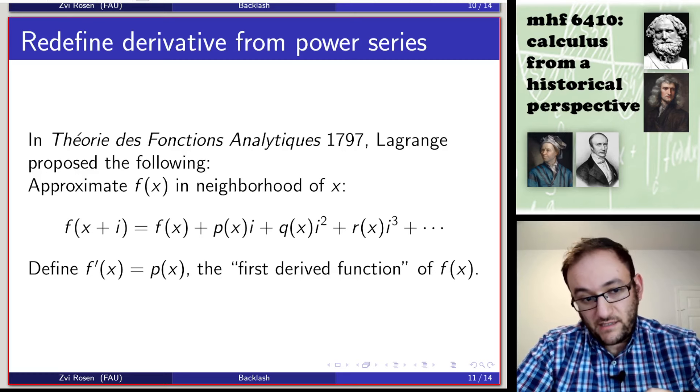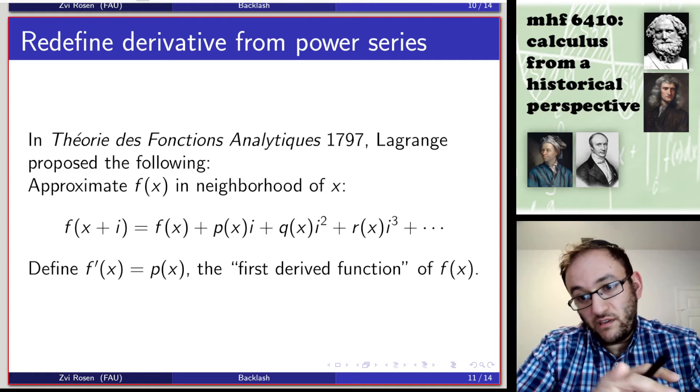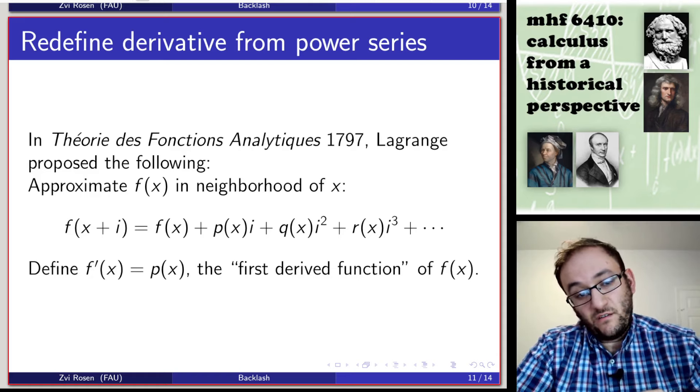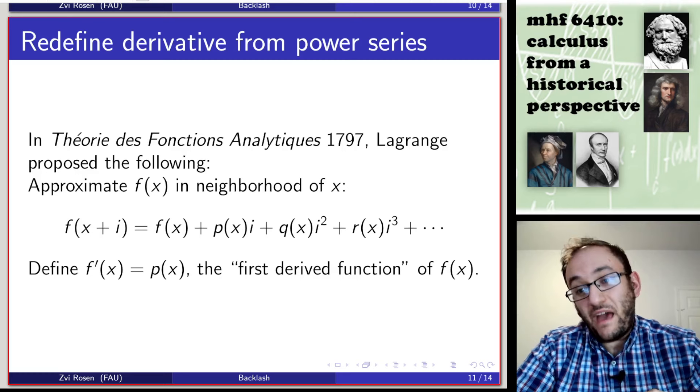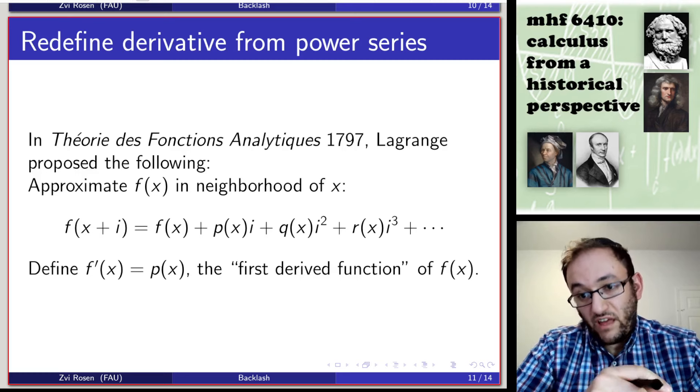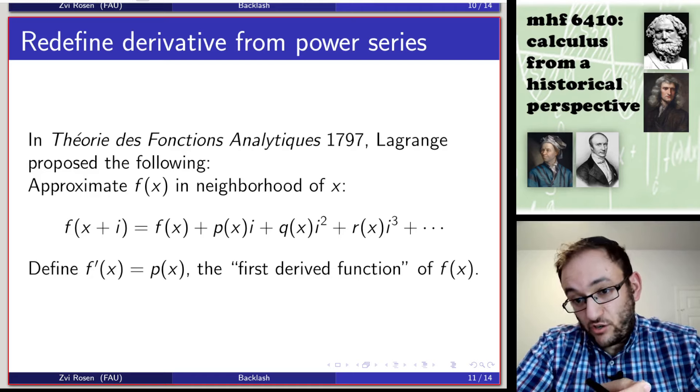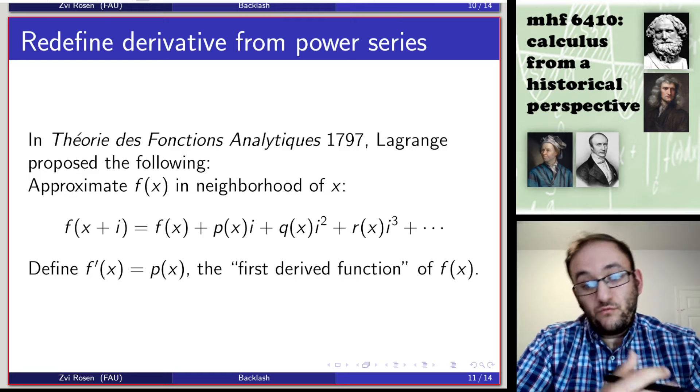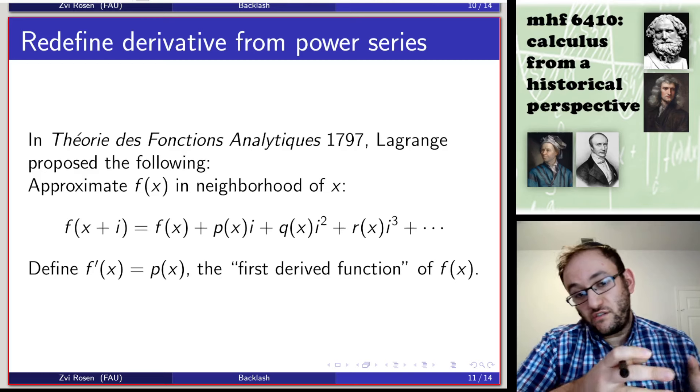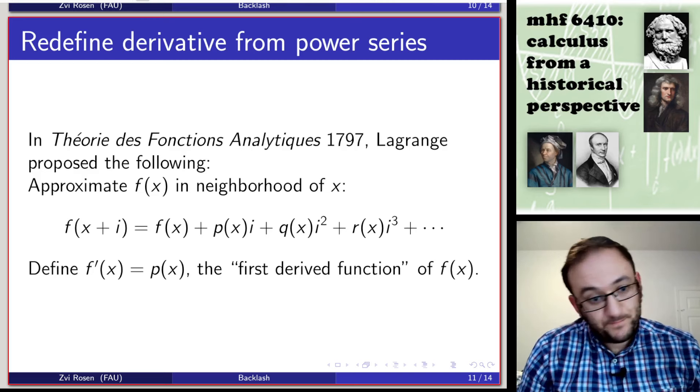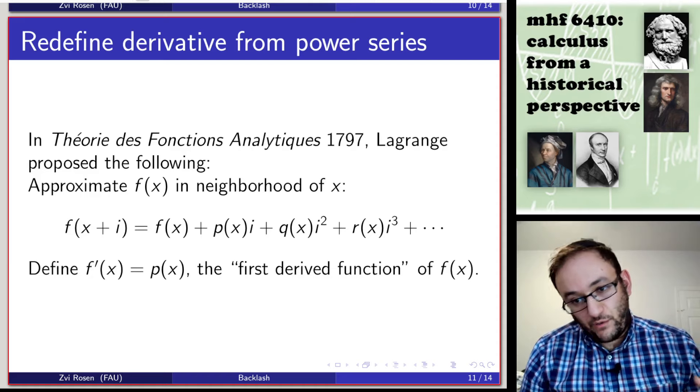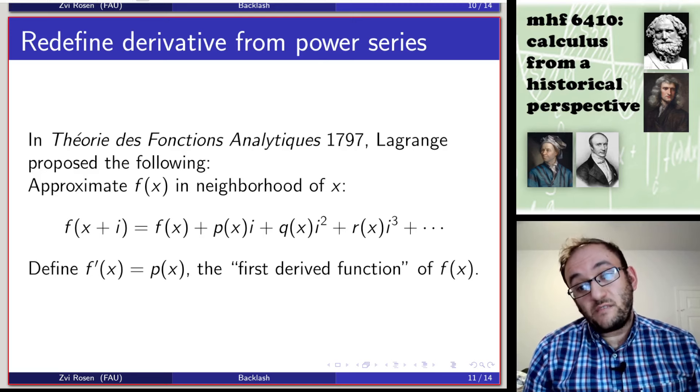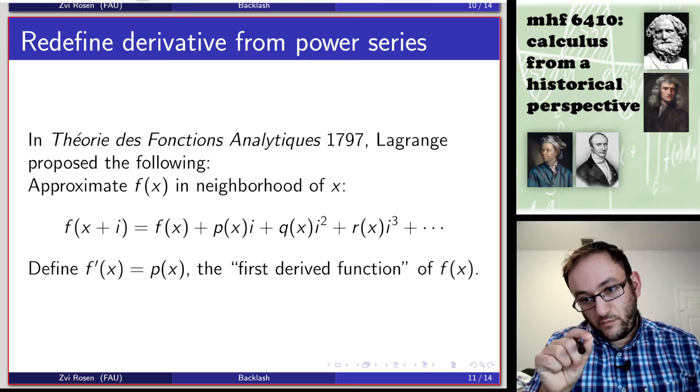If we want to take i to be some small quantity, then f of x plus i will be given as a power series in i. You start with the value at x, and then you have a linear term in i, whose coefficient is p of x, and a quadratic term of i, whose coefficient is q of x, etc. So it's functions of x times powers of i. With analytic functions, you can always expand functions in this way as power series in terms of the distance from your center point.